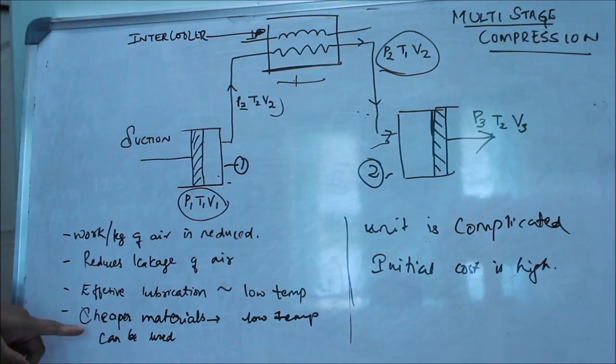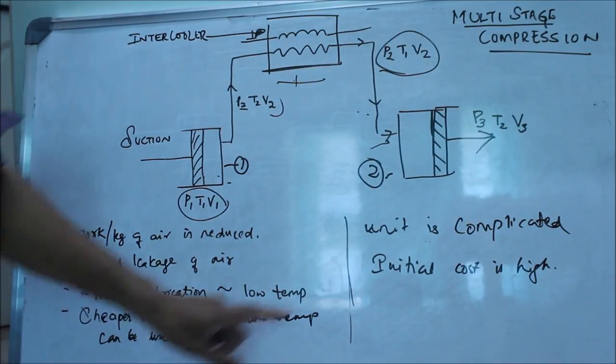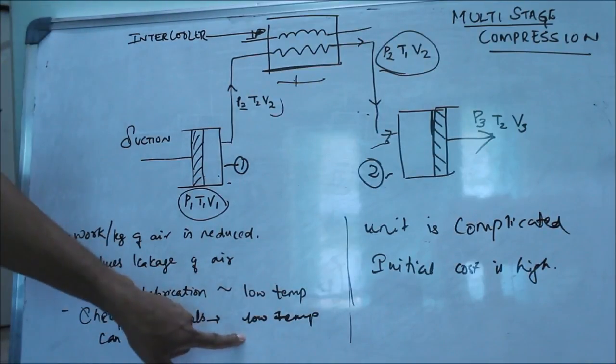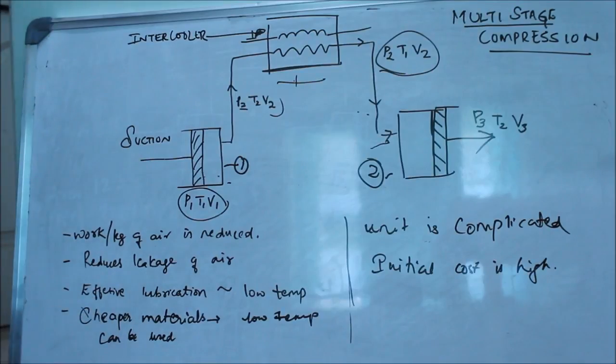The next advantage, again due to low temperature, is that cheaper materials can be used. You don't need materials that resist high temperature or high pressure because in multistage compression, we do it in two or more stages. Hence, the materials can be of lower grade. But there are a few disadvantages.